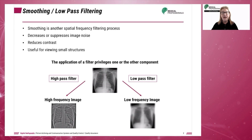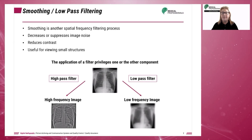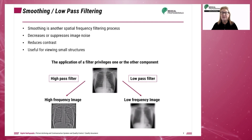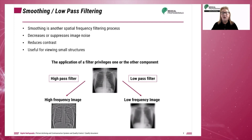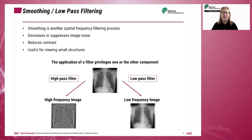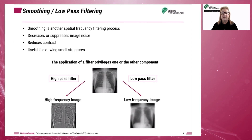Smoothing is another software function that removes high frequency noise from the image. In edge enhancement, the number of pixels averaged is reduced, whereas with smoothing, the number of pixels averaged is increased. Smoothing is the result of averaging each pixel's frequency with surrounding pixel values to remove high frequency noise. The more pixels involved in the average, the smoother the image will appear. This process reduces noise, brightness, and image detail.